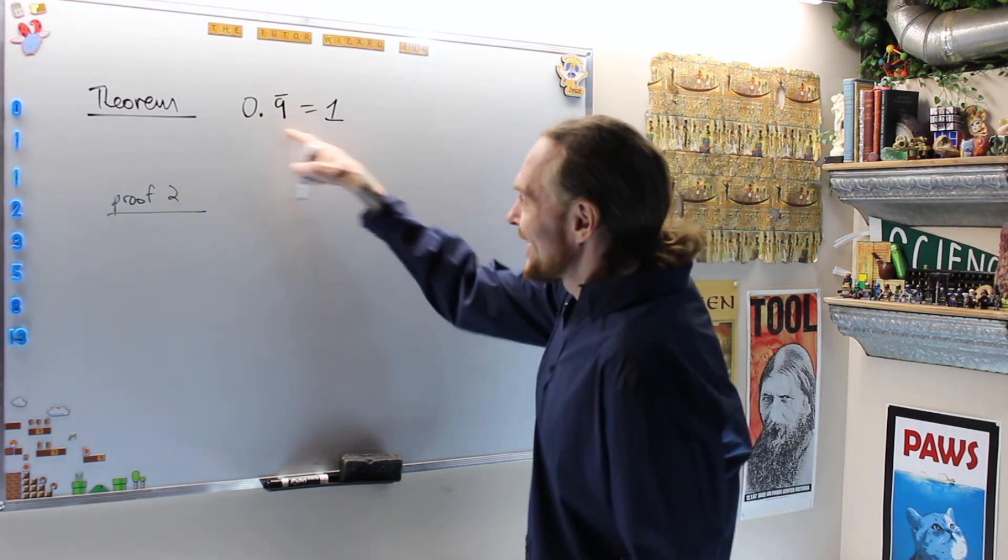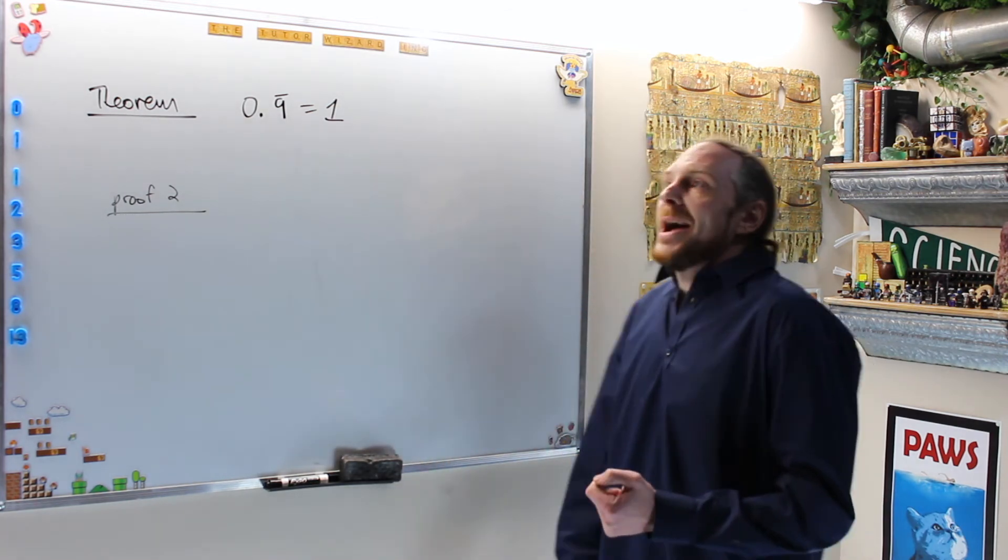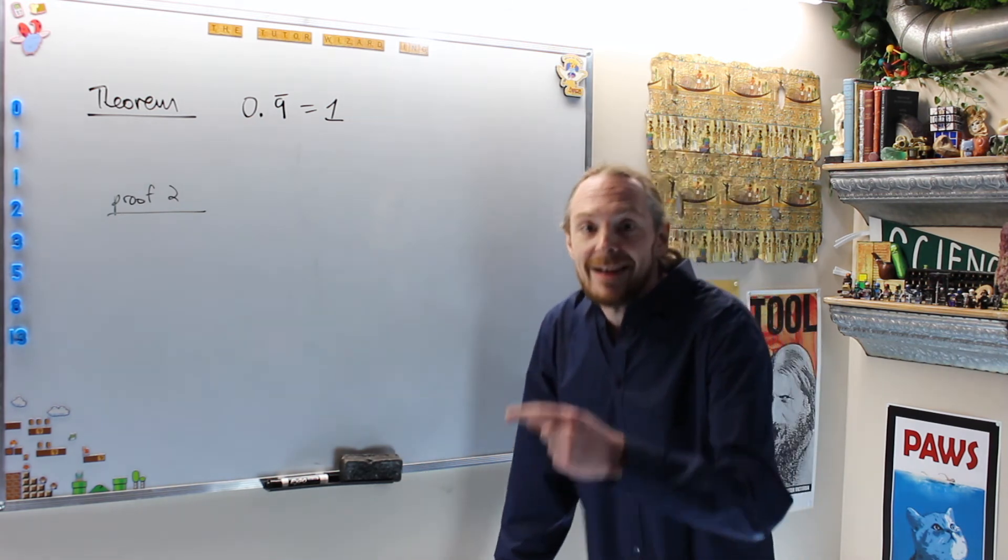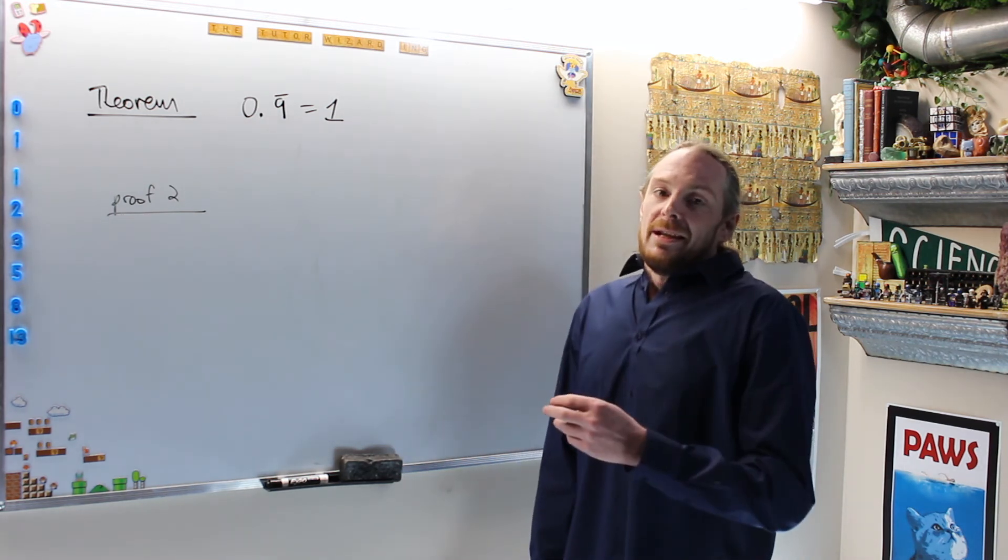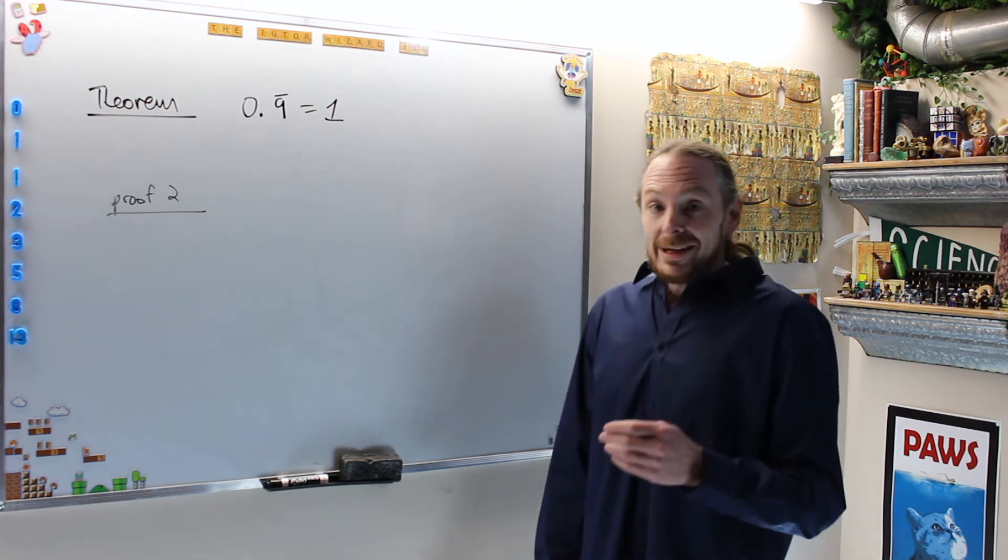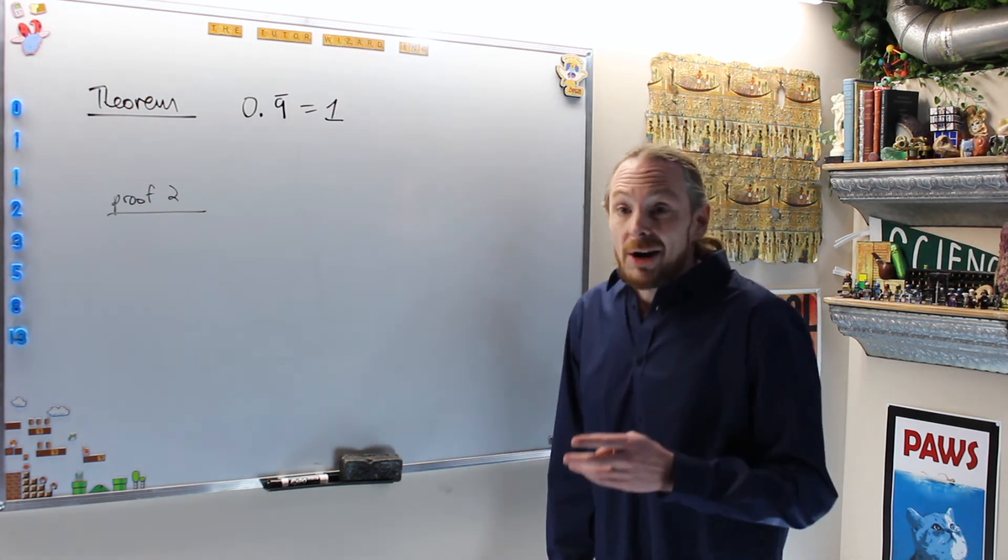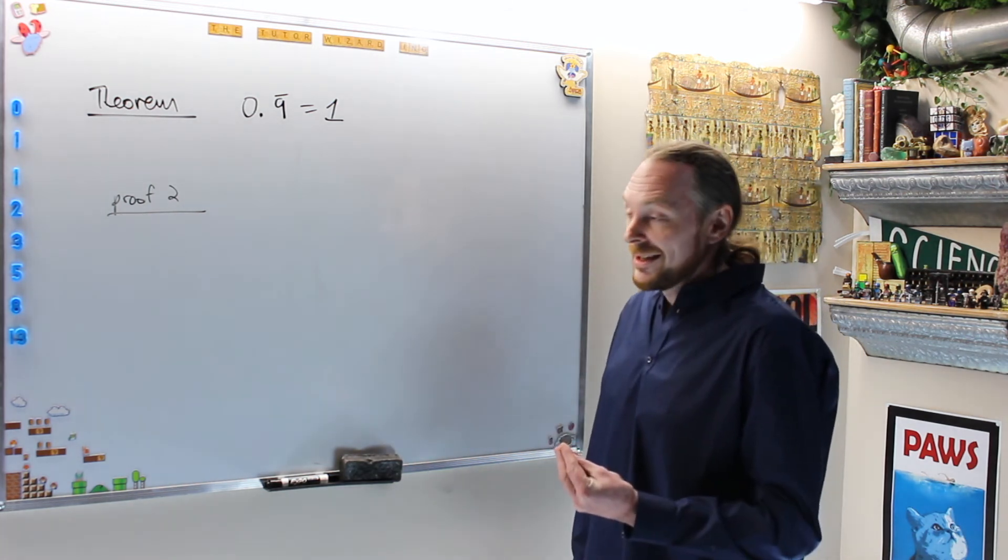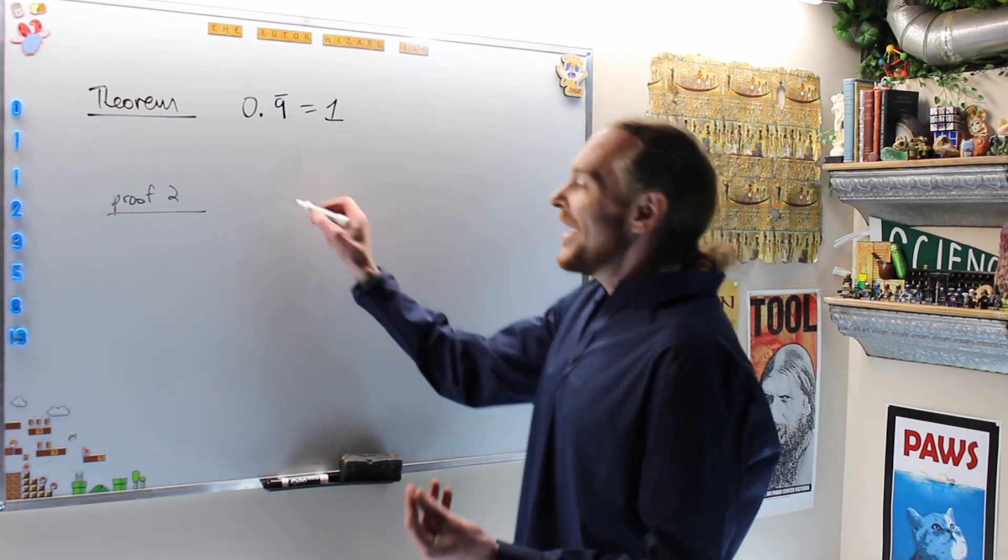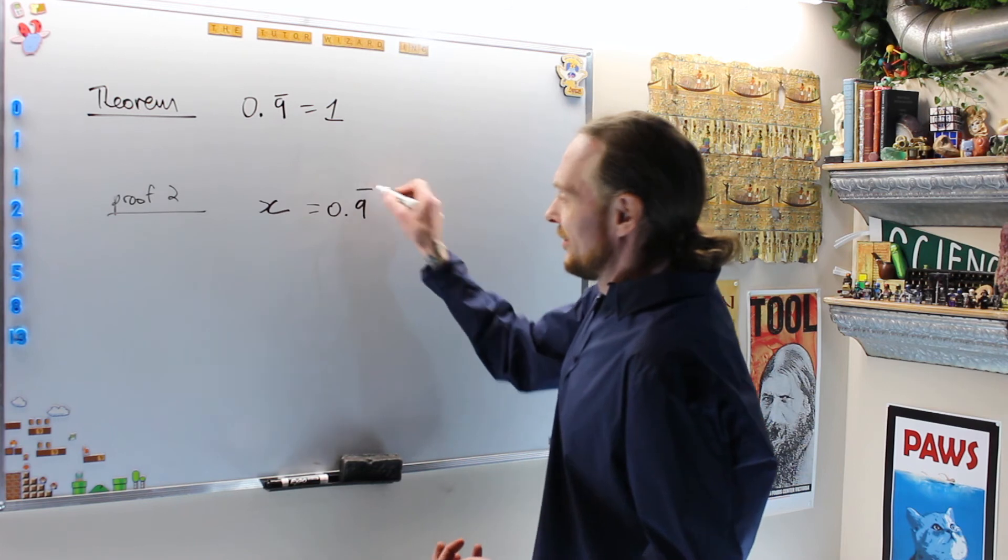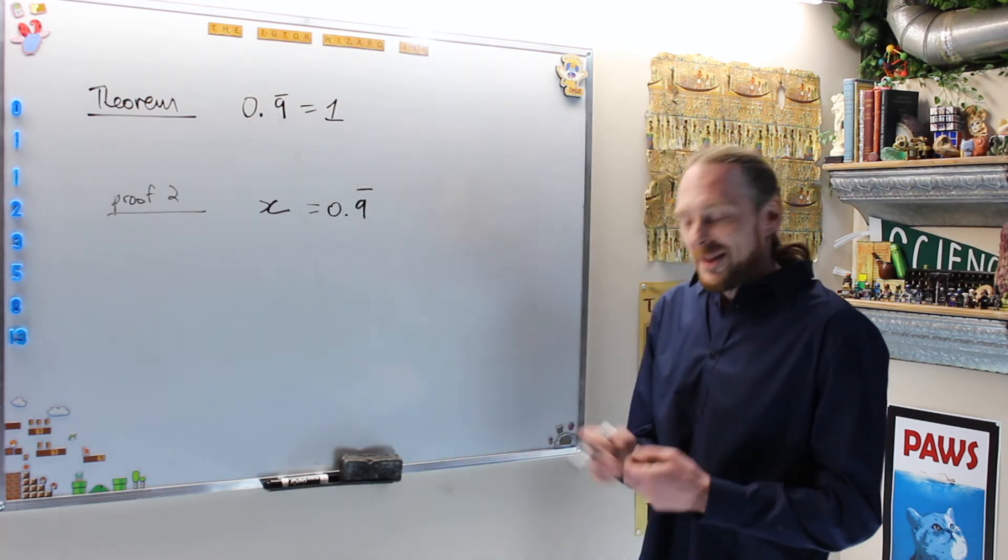0.9 repeating is still equal to 1. Let's go back to Muhammad ibn Musa al-Khwarizmi. He develops algebra, and that's why we get the word algorithm from his name al-Khwarizmi and the word algebra from his book al-Jabr. What do they do? Al-Khwarizmi says, call it x. So I'm going to call it x.